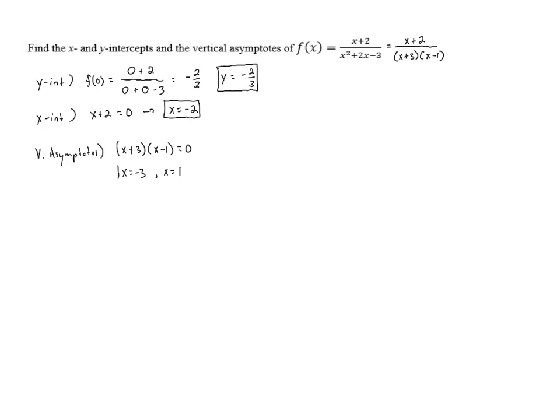These are the vertical asymptotes for the function, so we've found the y-intercept, x-intercept, and vertical asymptotes. If we wanted to actually graph this, we would need more information. Specifically, we'd need to know how the graph approaches the asymptotes—whether it goes up toward infinity or down toward negative infinity on each side—and the end behavior, which we haven't covered yet. For now, we'll be satisfied with finding the intercepts and vertical asymptotes.